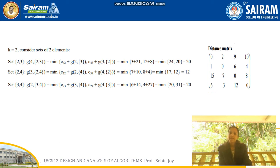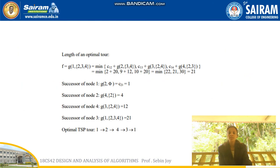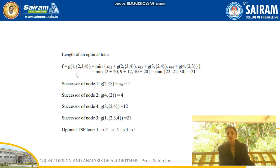For k=3, since there are 4 vertices, we get only one set: {2,3,4}. We find g(1,{2,3,4}) by computing minimum of c(1,2) + g(2,{3,4}), c(1,3) + g(3,{2,4}), and c(1,4) + g(4,{2,3}). The minimum value obtained is 21, which is the optimal minimum cost for this traveling salesman tour.